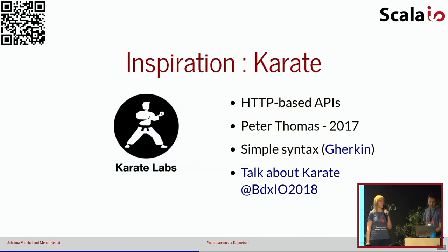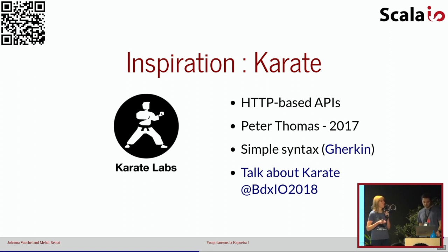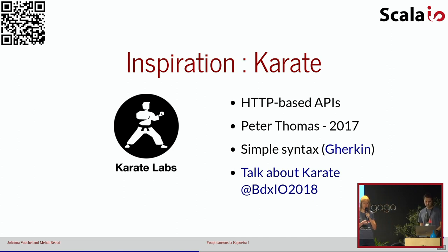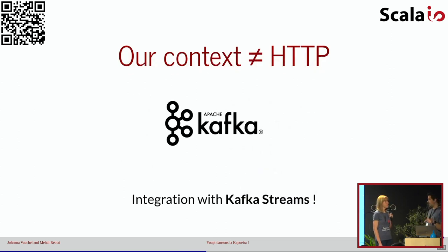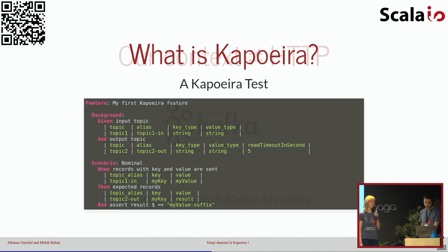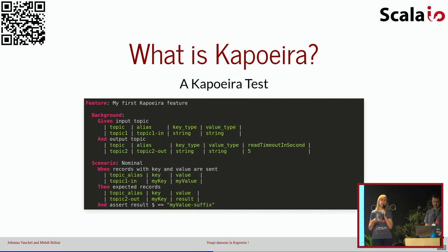Ce que tu dis me fait penser à un outil qui existe déjà. Ça s'appelle Karate. Ça permet de tester les API HTTP. Ça a été créé en 2017, et ça s'appuie sur une syntaxe simple : la syntaxe Gherkin, le fameux Given When Then. J'en avais entendu parler à BDXIO en 2018, présenté par Nicolas Comey et Benoît Priou. On pourrait peut-être s'en inspirer ? Oui, c'est intéressant. Mais là, on parle bien de tests Kafka et pas de tests HTTP. Et à ma connaissance, Karate ne gère pas du Kafka. De plus, on veut tester nos Kafka Streams, et pour l'instant on n'a pas l'outil qui permet de faire ça.